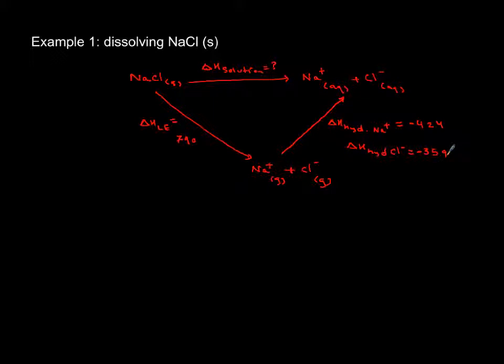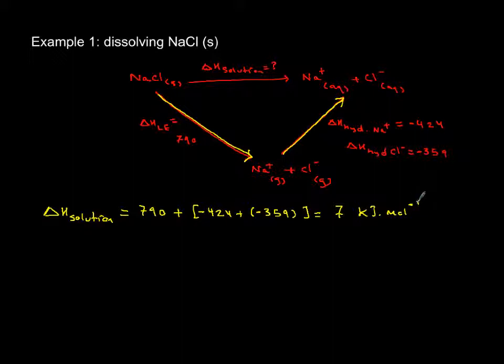Let's add these quantities and calculate delta H solution. These two arrows equal the delta H solution. Delta H solution is therefore +790 plus two negative quantities. When you do that, you get about 7 kilojoules per mole—a tiny quantity. That's why sodium chloride can easily be dissolved in water with not much fluctuation in temperature. Let's do another example—potassium bromide.